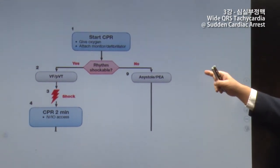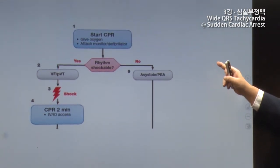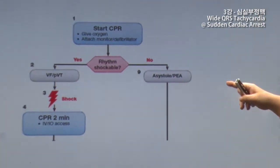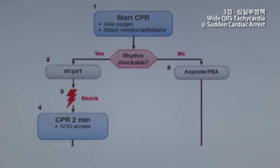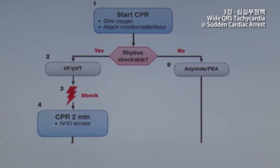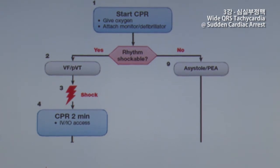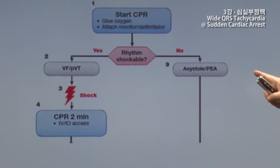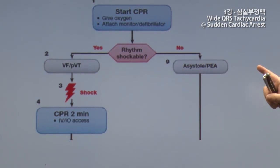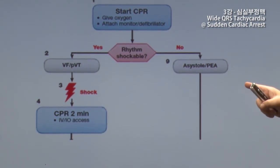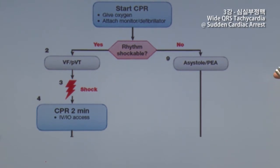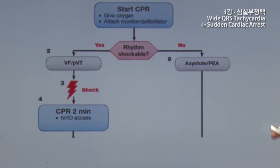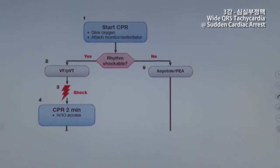First, you do CPR. The first step is to assess and initiate CPR. In the hospital, doctors are monitoring the patient. In the public setting, the AED is assessing whether the rhythm is shockable. The shockable rhythms are VT or VF. If it is a shockable rhythm, you deliver a shock and do CPR. If it is not a shockable rhythm — such as asystole or PEA — you follow the algorithm again.